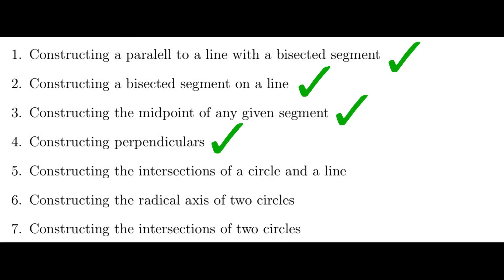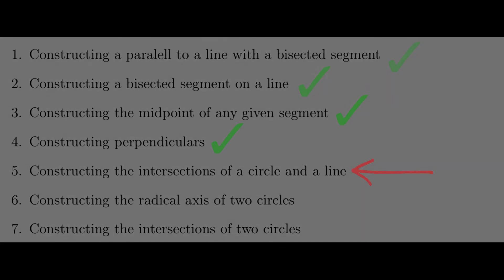Now we are ready to see how we can find the intersection of a line and a circle. Say we have a circle which is just two points, and a line, and we want to find their intersection points. The key idea here is that we will scale down the circle with a point of projection so that it falls on the given circle. Then we can find the intersections in the given circle. Once we have those, we can project them back up to their original position.